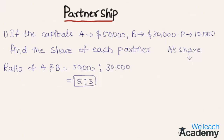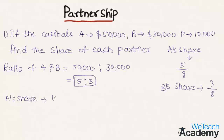A's share is 5 divided by (5 plus 3), that is 5/8, and B's share is 3/8. So A's share of the profit would be 10,000 multiplied by 5 divided by 8.